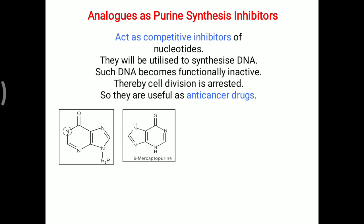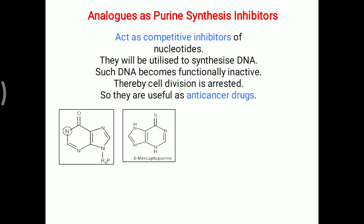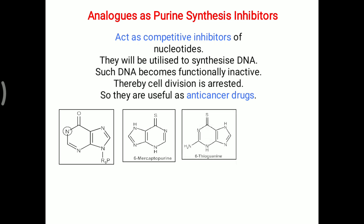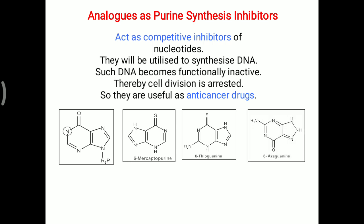In the structure, you can first see the structure of inosine monophosphate. Next is 6-mercaptopurine, where over the 6-carbon position an SH group is present. There is a thio group present over guanine at the 6-position, while over the 8-position of guanine there is an aza group present. So 6-mercaptopurine, 6-thioguanine, and 8-azaguanine all work as competitive inhibitors of the purine ring.